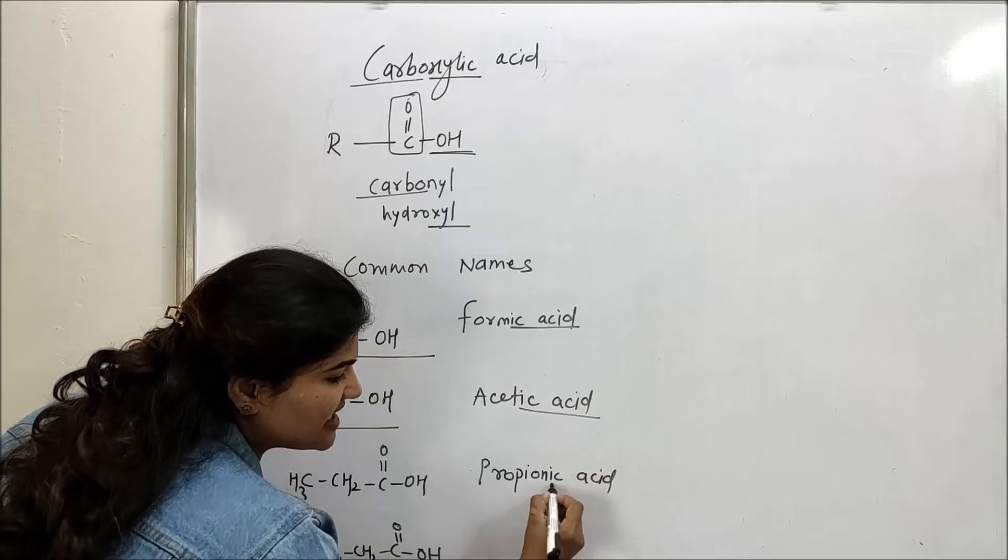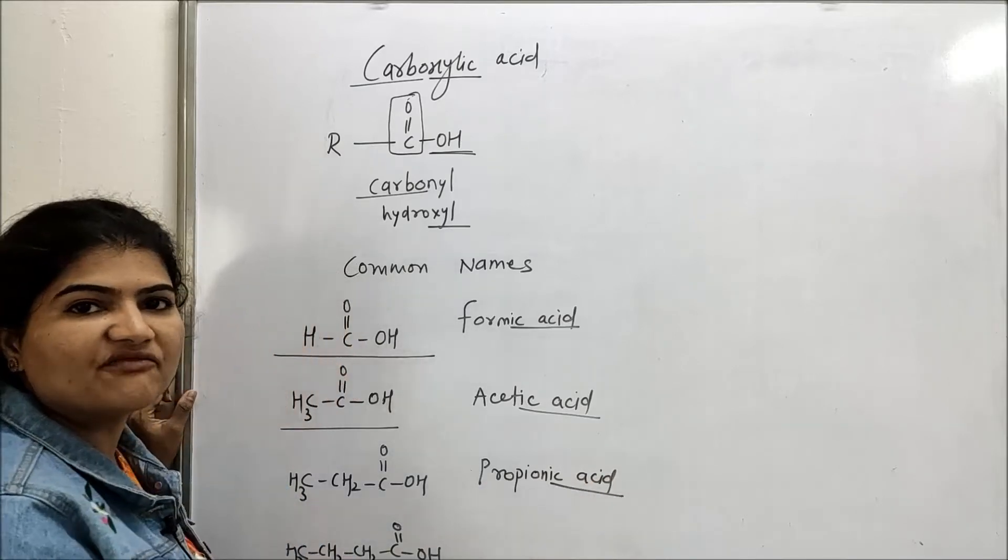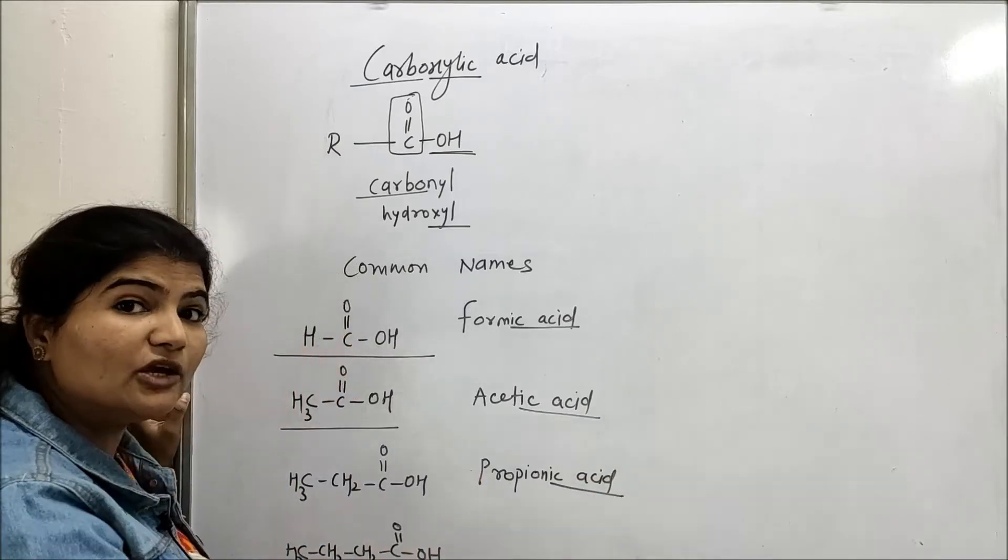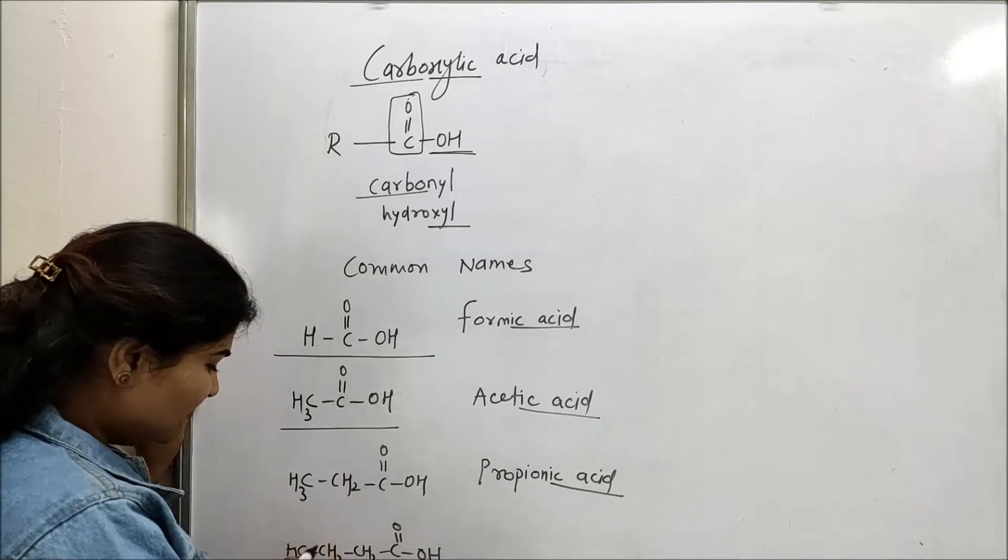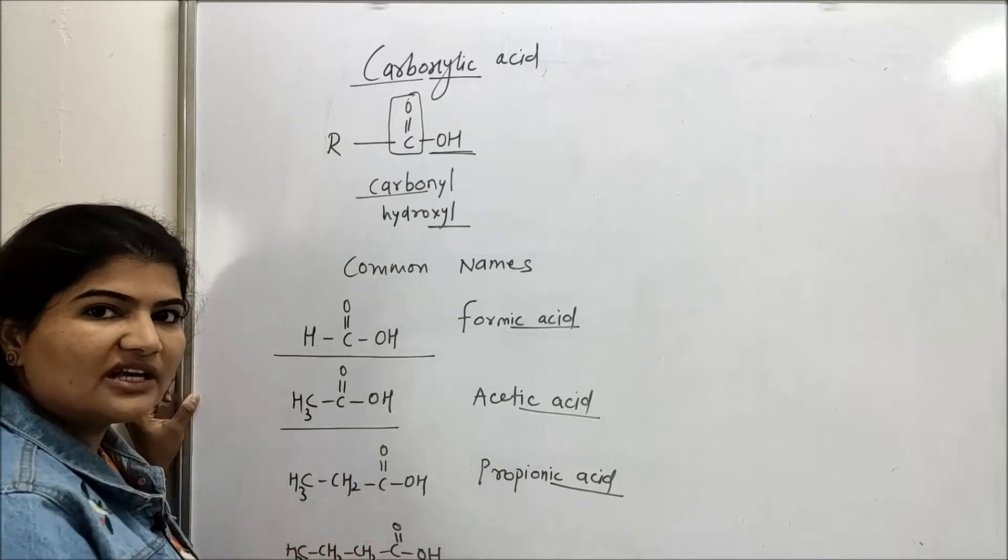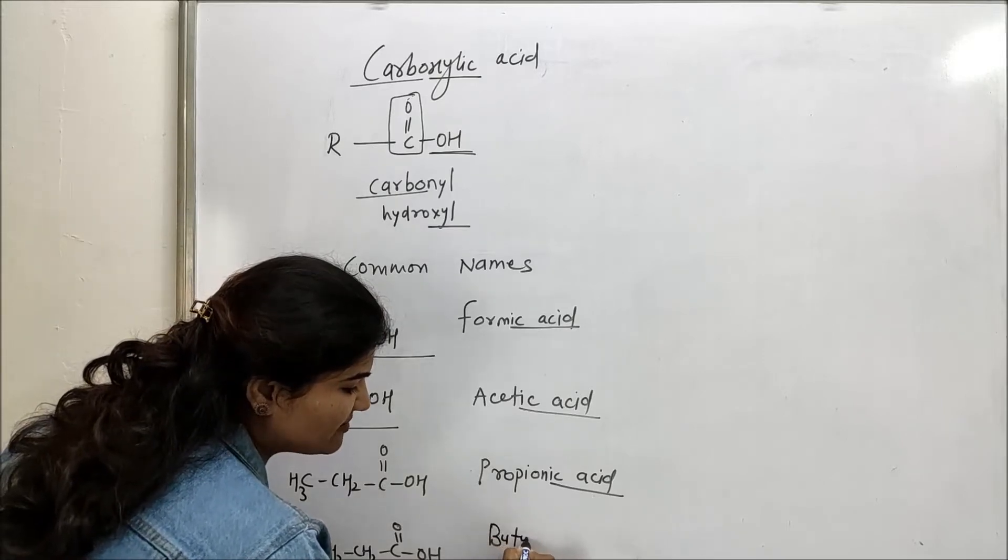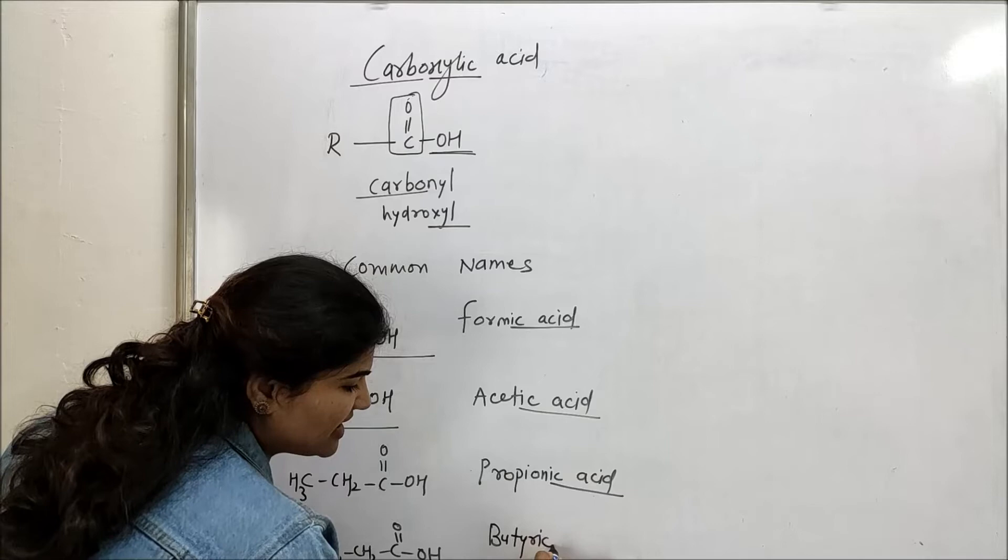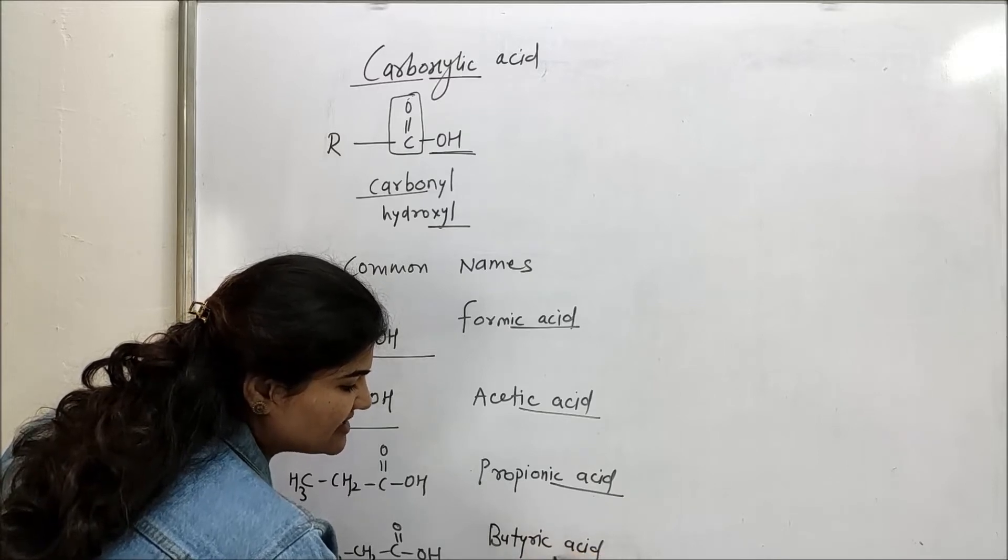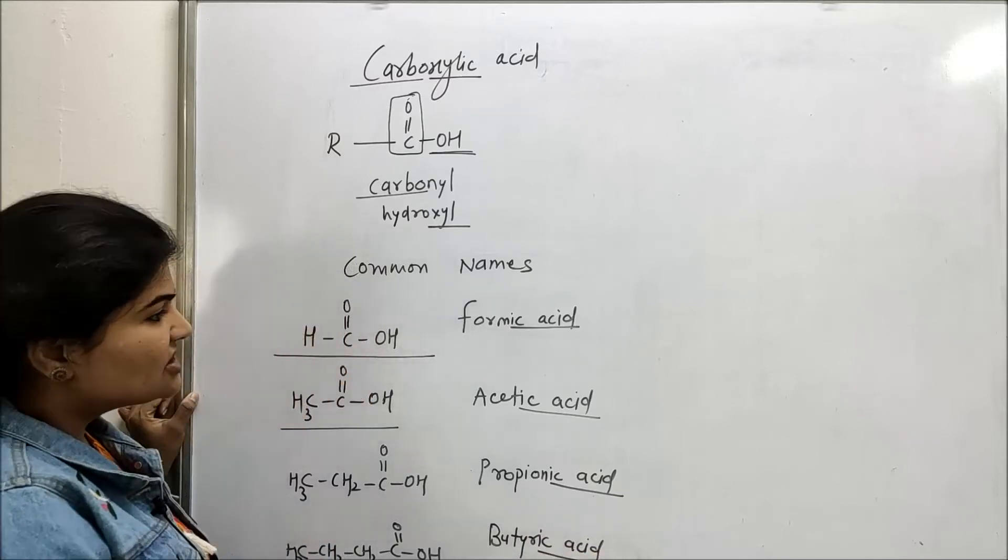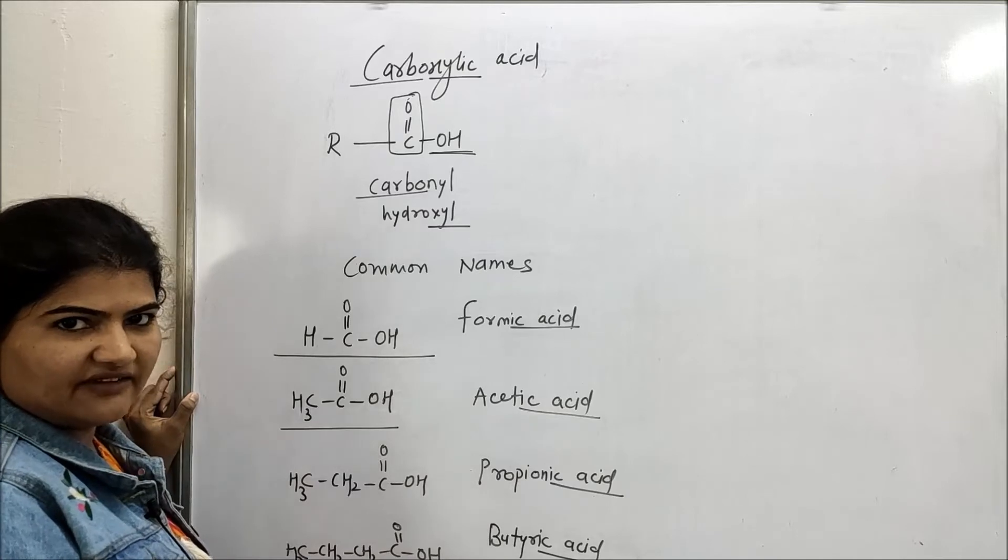Here again, IC acid is going to be the suffix for acid. Propionic acid. Then for this 1, 2, 3, 4, four carbon containing, it will be butyric acid. Now these names you have to remember as it is. Butyric acid. Again you can see IC acid is the suffix. So this is how the common names were derived. But nowadays we are relying on the IUPAC system.